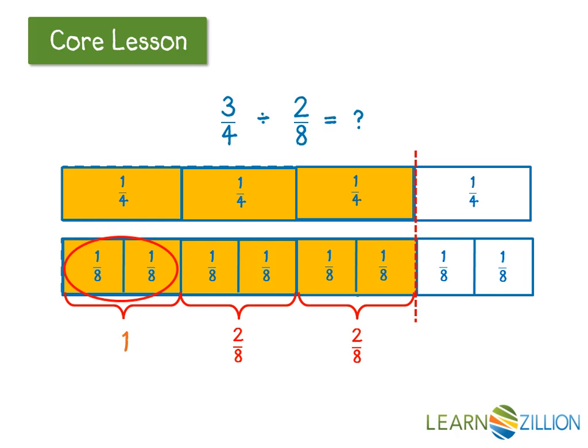Now I can see that there are 1, 2, 3 sets of 2 eighths in 3 fourths. So my quotient is 3.